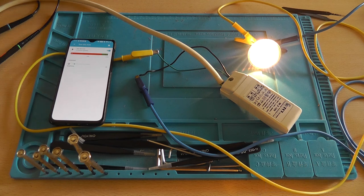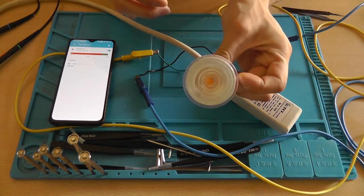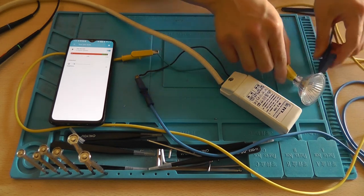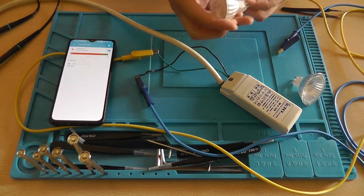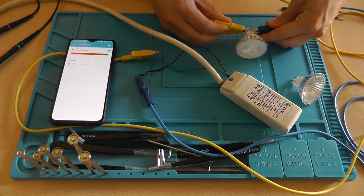Notice that the trailing edge dimming method has a limit on how low it's able to be dimmed. But after swapping the light bulb for an LED light bulb, we should be able to see that the LED light bulb is dimmable too.